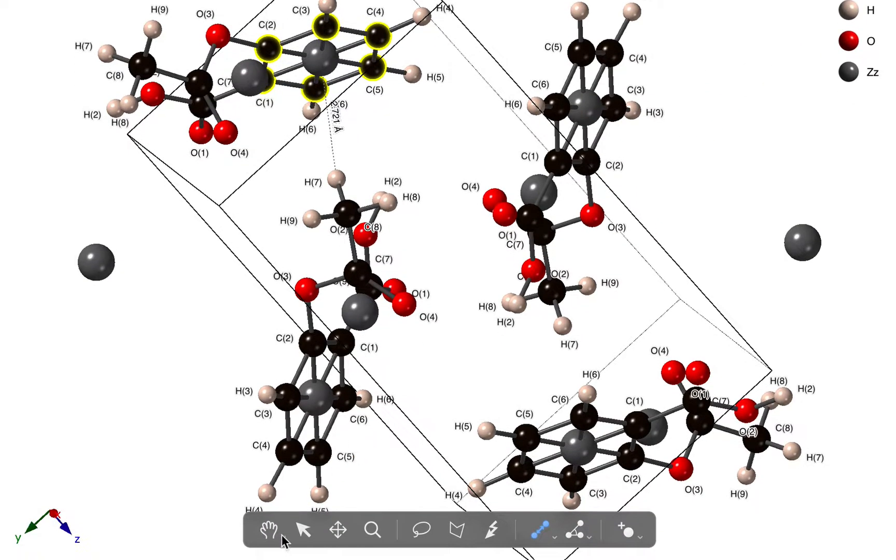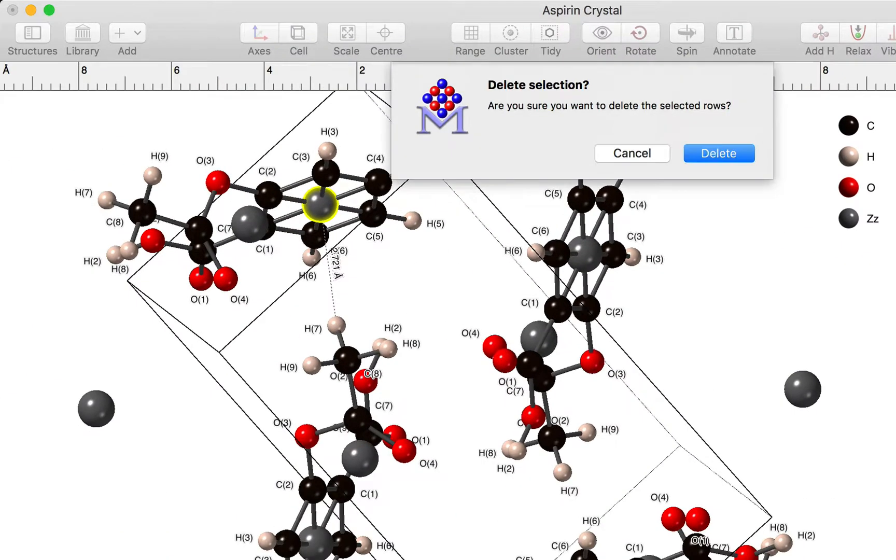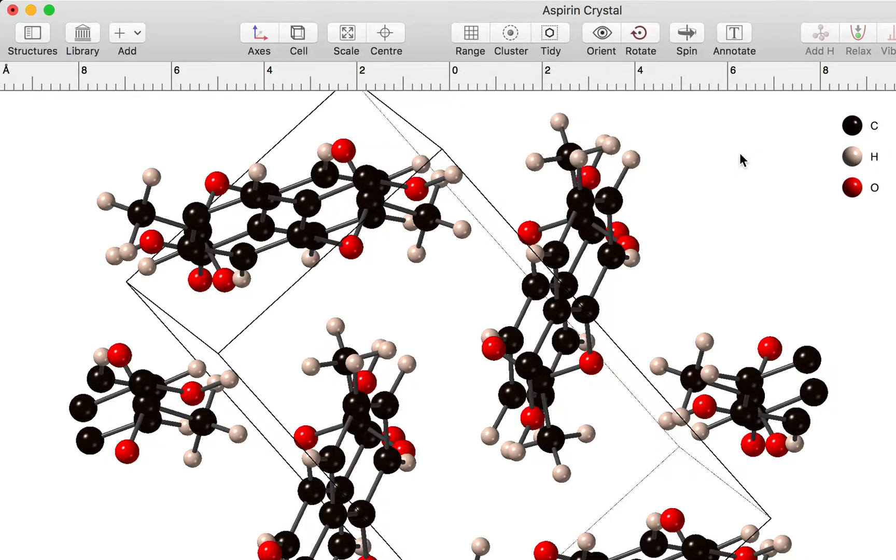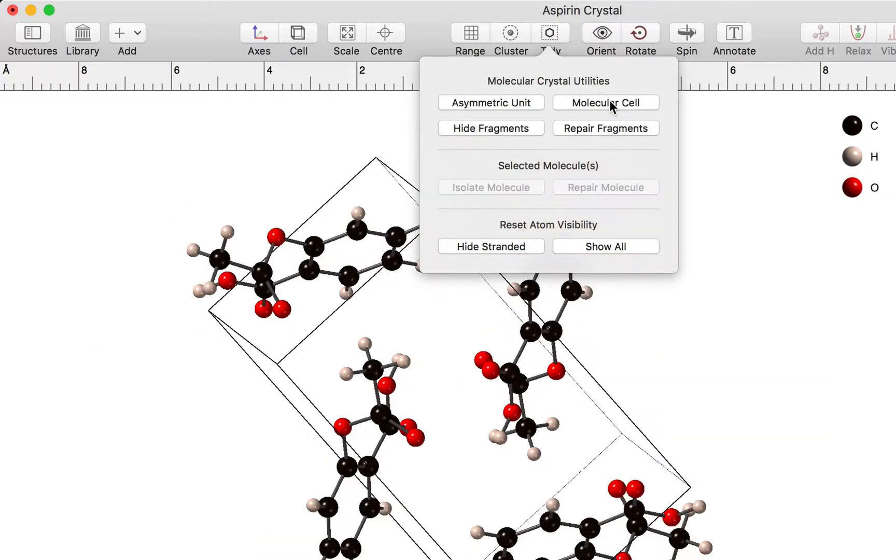I can do this in various ways. I can go down to the arrow tool and select the atom and delete it, or I can go to the atoms inspector, select the row containing the atom and press the delete key. I'm going to go back to the tidy command and go back to the molecular cell now.